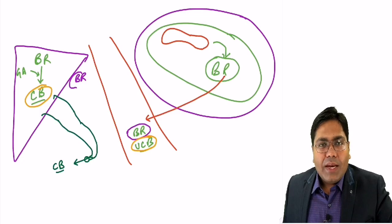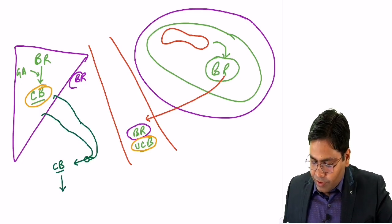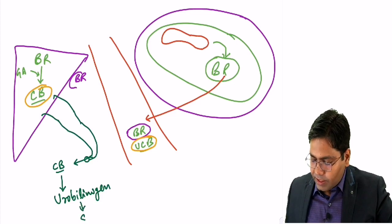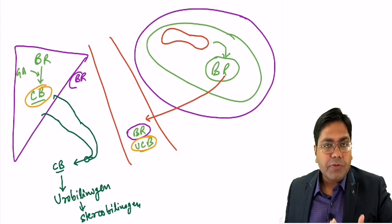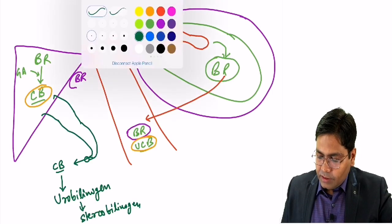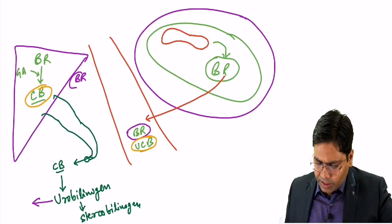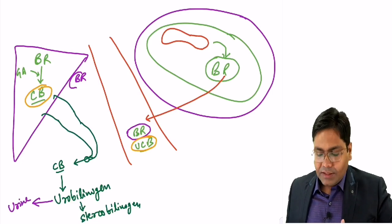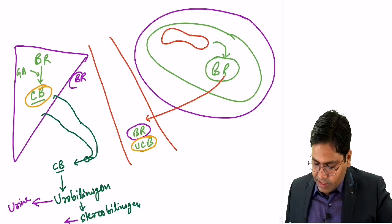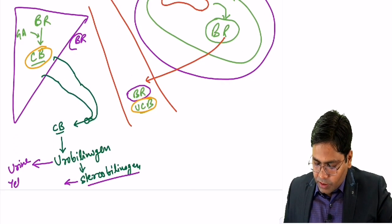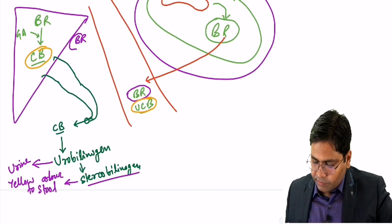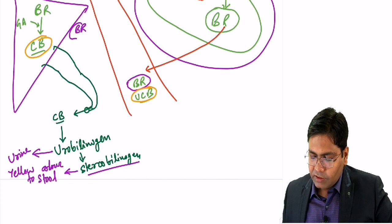This conjugated bilirubin, when it comes out in the intestine, will form urobilinogen. This urobilinogen will further form stercobilinogen. Urobilinogen will be reabsorbed from the intestine and goes into urine, while stercobilinogen will be excreted via feces. Stercobilinogen gives the yellow colour to faeces, and urobilinogen gives the yellowish colour to urine.